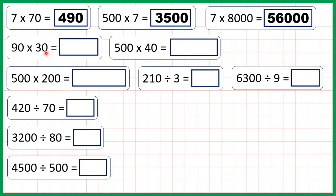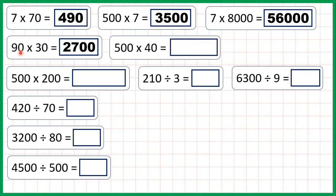90 times 30 is 2,700, because 9 times 3 is 27, but here we have two end zeros in the question — one here and one here — so we need two end zeros in our answer. So we multiply the non-zero digits, then count how many zeros we have, and put them on the end.